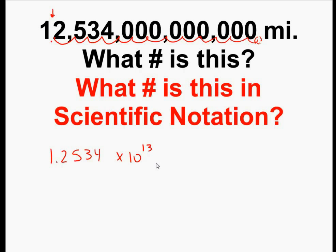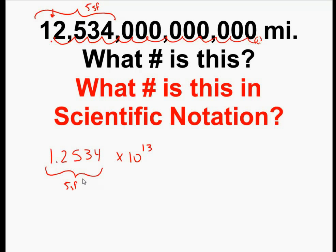That's my answer in scientific notation. It's much easier to say 1.2534 times 10 to the 13th than it is trying to guess what that number is. You're going to notice that my original number did not have a decimal point, so I kind of made an imaginary one. The sig figs I had — I had five of them to start out with. In my scientific notation answer, I have five sig figs as well. Just make sure your answer has as many sig figs as the original problem.